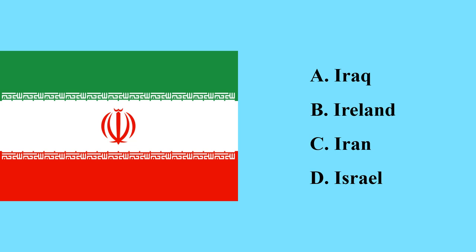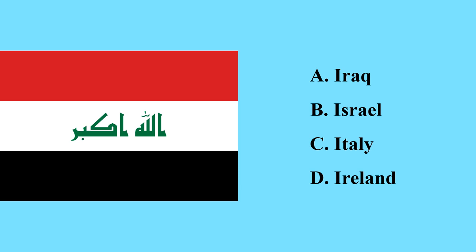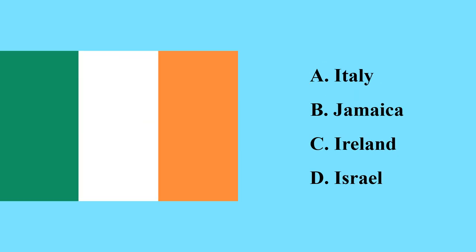This is a flag of Iran — Iran is a country in Asia; its capital city is called Tehran. This is the flag of Iraq — its capital is Baghdad; it is another country in Asia.